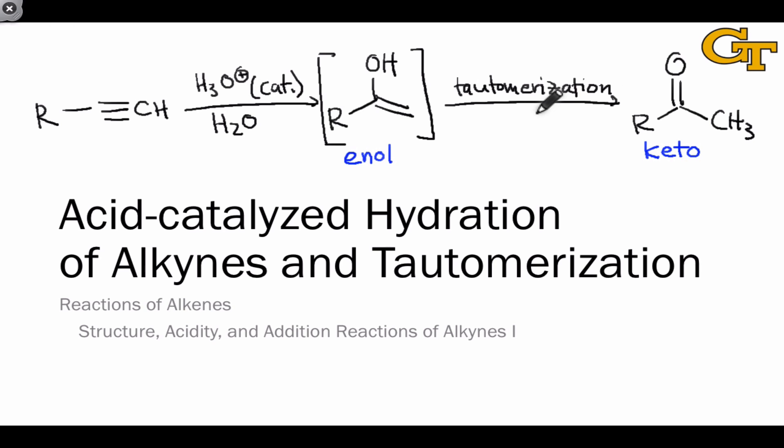Mechanistically, tautomerization is very simple. It just involves a couple of proton transfers, and for this reason, it reaches equilibrium very rapidly and is thermodynamically controlled. This means that we can use the relative stabilities of the enol and keto forms and quantitative thermodynamic data like bond dissociation energies to understand why one form is favored over the other.